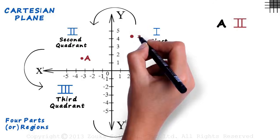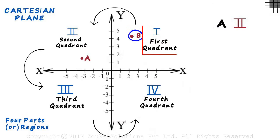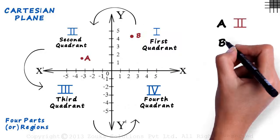Let's assume I mark point B here. This point is in the first quadrant. We write B first here.